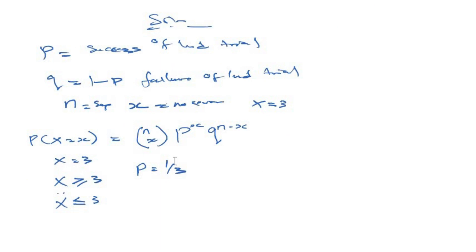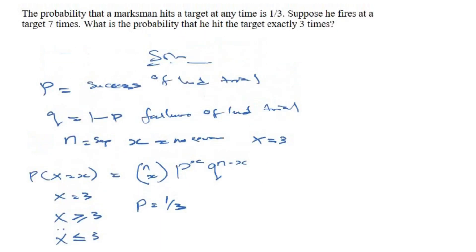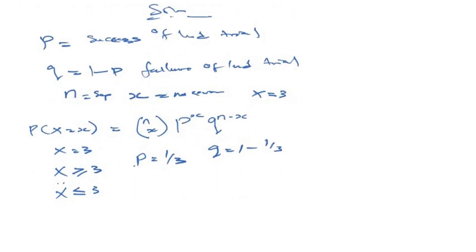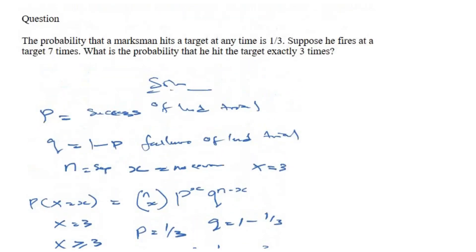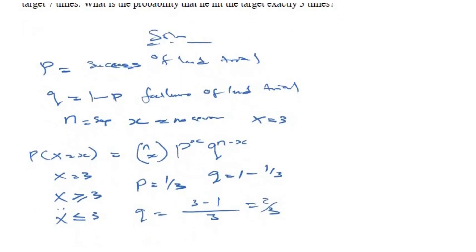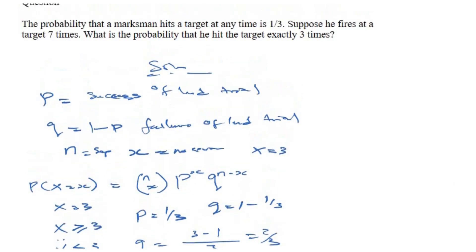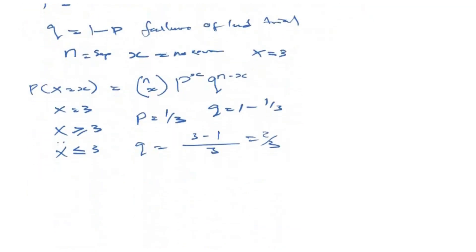Once we have the success, we can find the failure. Our failure q is equal to one minus one over three. Finding the LCM, q equals three minus one over three, which is two over three. We are given seven times, so the total number of trials n equals seven. We are told to find the probability of exactly three times, so x equals three. These are our parameters.